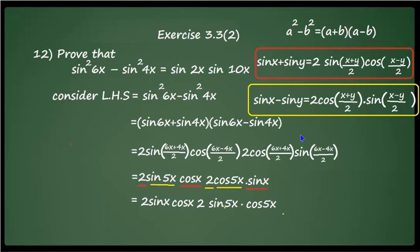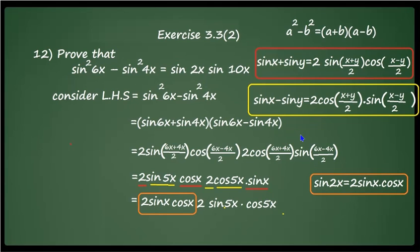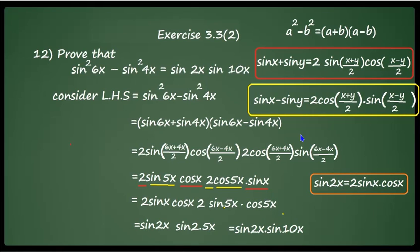We use the formula sin 2x = 2 sin x cos x. So 2 sin x · cos x = sin 2x, and 2 sin 5x · cos 5x = sin(2 · 5x) = sin 10x. Replacing these gives sin 2x · sin 10x, which equals the right-hand side. This is an important question and a similar one will definitely appear in the annual exam.